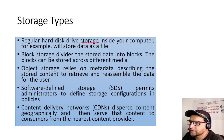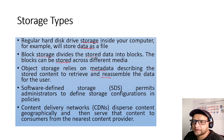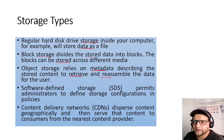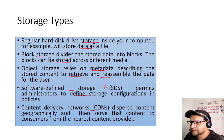Storage types in the cloud: File storage is the regular hard disk storage inside your computer. Block storage divides data into blocks that can be stored across different media. Object storage relies on metadata describing the stored content to retrieve and reassemble data — making retrieval more customizable, such as pulling data by author or timestamp. Software-defined storage permits admins to define storage configuration and policies.